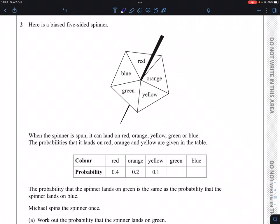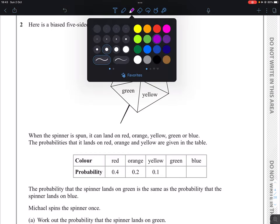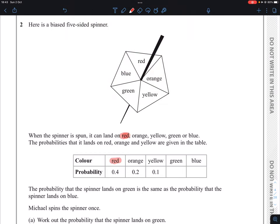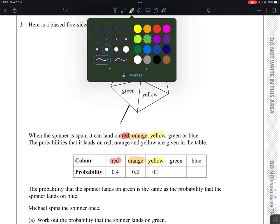Question number two. Here is a biased five-sided spinner. When the spinner is spun, it can land on red, orange, yellow, green, and blue.